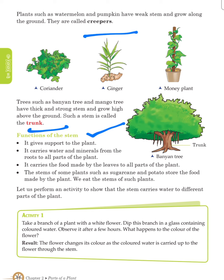Let us perform an activity to show that the stem carries water to different parts of a plant. Activity 1: Take a branch of a plant with a white flower. Dip this branch in a glass containing colored water. Observe it after a few hours. The flower changes its color as the colored water is carried up to the flower through the stem.